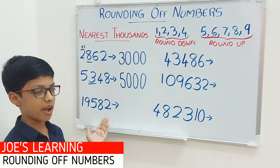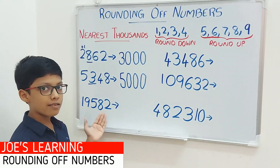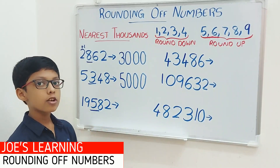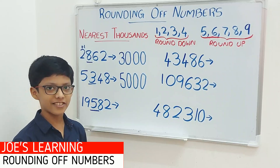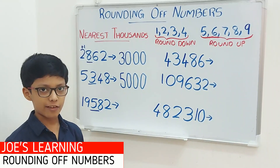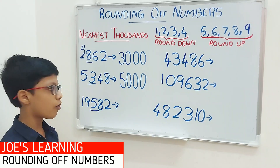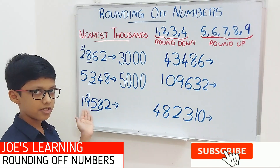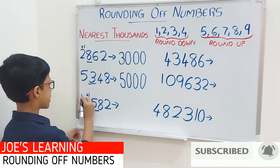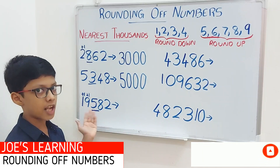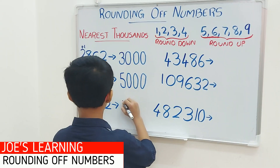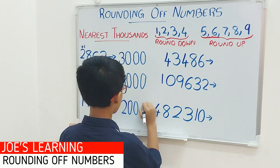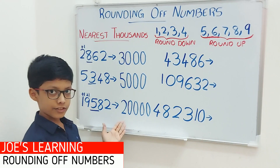Now let's take a look at this example, that is 19,582. First you have to look at the digit in the hundreds space — 5 is in the hundreds space. We compare it with 5: 5 is equal to 5. So we have to put a 0 in the ones, tens and hundreds space and add 1 to the digit in the thousands space. That makes 10, so we carry over another 1 to the ten-thousands space. So 19,582 rounded off to the nearest thousands equals 20,000.